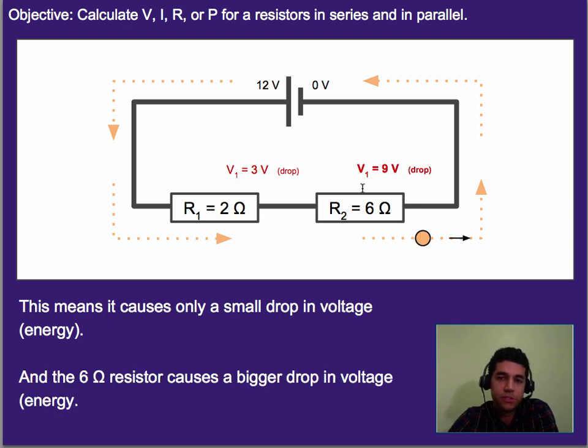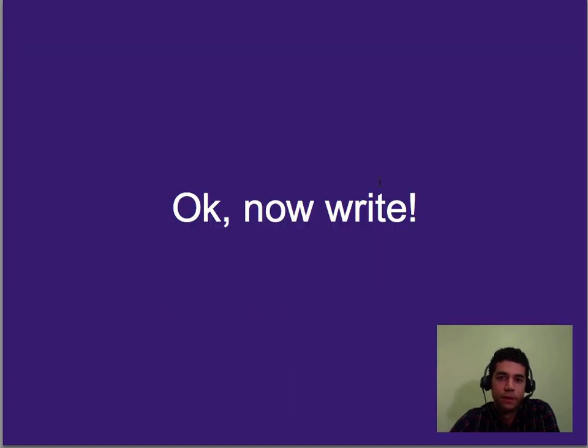Whereas the bigger resistor, since it's 3 times as big, would require 3 times as much energy, and therefore 3 times the voltage, so it will cause a 9 volt voltage drop. Together notice, though, that it's 12 volts total. Okay, now's the time to write.